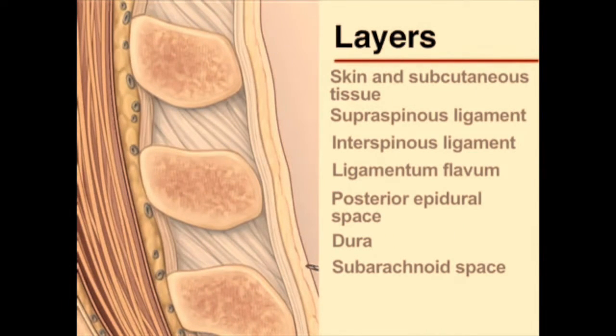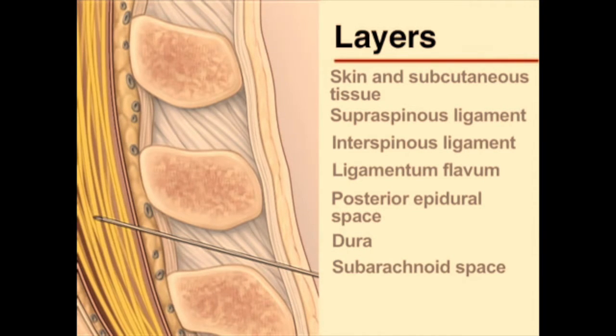If properly positioned, the needle should pass through the skin, the subcutaneous tissue, the supraspinous ligament, the interspinous ligament between the spinous processes, the ligamentum flavum, the epidural space including the internal vertebral venous plexus, the dura, the arachnoid, into the subarachnoid space, and between the nerve roots of the cauda equina.